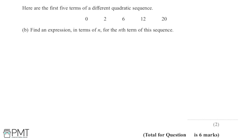In this part of the question, we're given the first five terms of a different quadratic sequence: 0, 2, 6, 12 and 20, and asked to find an expression in terms of n for the nth term. Since it's a quadratic sequence, the general form is un equals an squared plus bn plus c, and the n squared term is what makes it quadratic.